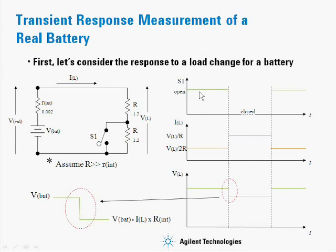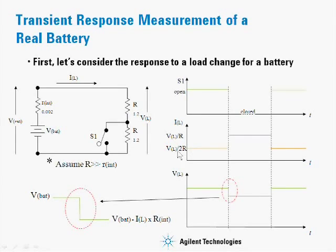In the graph on the right, we show that the switch starts in the open position, moves secondly to the closed position, and then returns back to the open position. The current in the circuit when the switch is open is VL divided by 2R, and when the switch is closed is VL divided by R.